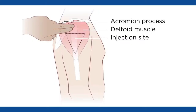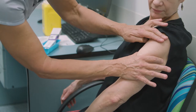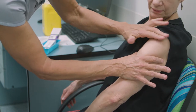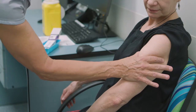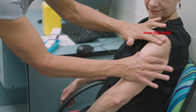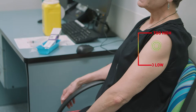The routes of administration are recommended by the manufacturers of each vaccine. Most are given intramuscularly in the central and thickest portion of the deltoid muscle, above the level of the armpit and approximately two to three fingerbreadths below the acromion process. To avoid causing an injury, don't inject too high near the acromion process or too low.